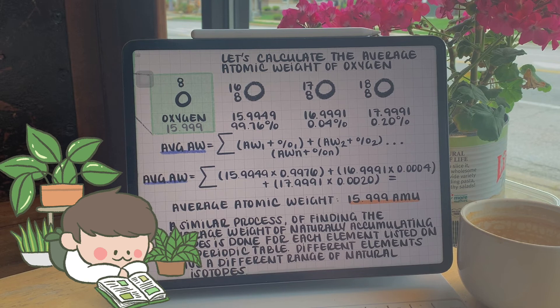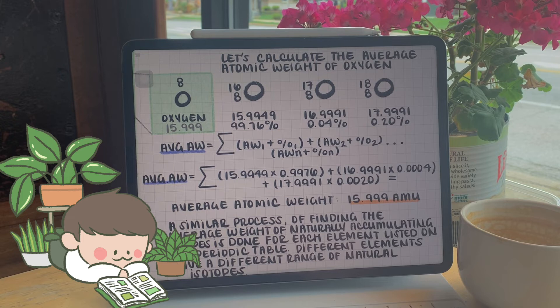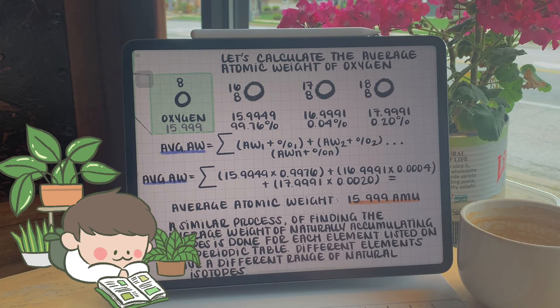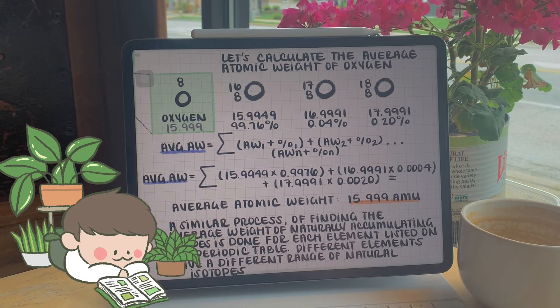And so this is more or less what is formulated for each of the atomic masses listed on the periodic table.